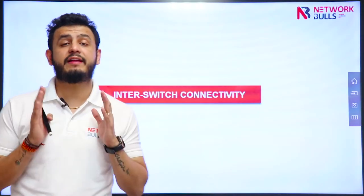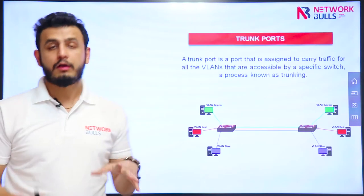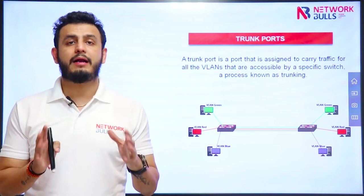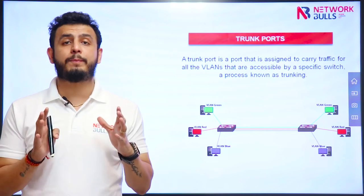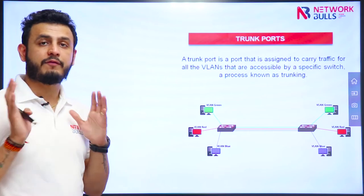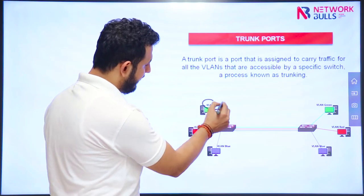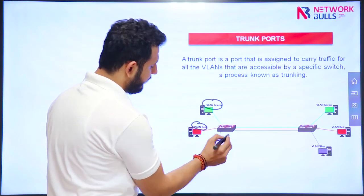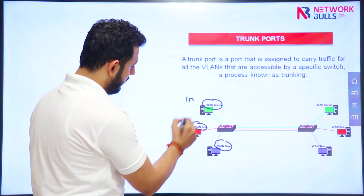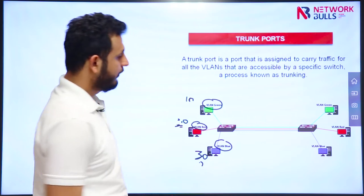In this video we will discuss inter-switch connectivity using trunk links. In the last video we discussed access ports — ports which are used to pass traffic for a single VLAN. Using the same diagram, let's say we have three VLANs: VLAN green, VLAN red, and VLAN blue, which can also be numbered 10, 20, and 30.